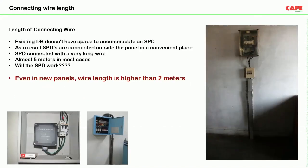In practice, many examples exist of poor SPD installation. Sometimes installers do not have space in an existing distribution board, so they place the SPD in a separate DB, resulting in wire lengths as high as 5 meters. In practical experience, wire lengths of 10 to 12 meters have been seen.